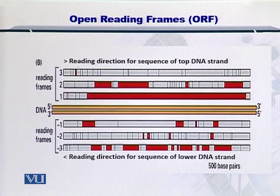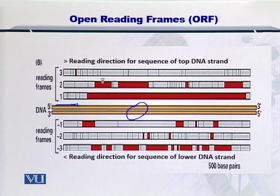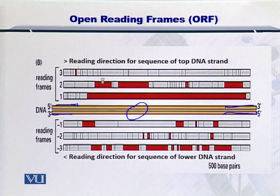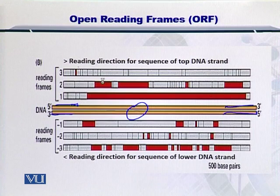As you can see in this figure, we have the DNA sequences provided in the middle. You can note the 5' to 3' direction on the upper strand and the 3' to 5' on the lower strand. The lower strand is obviously complementary to the upper strand. Now, to move towards the open reading frames, just consider the 5' to 3' strand. If you have this strand and its sequence, then you can have three possible open reading frames.